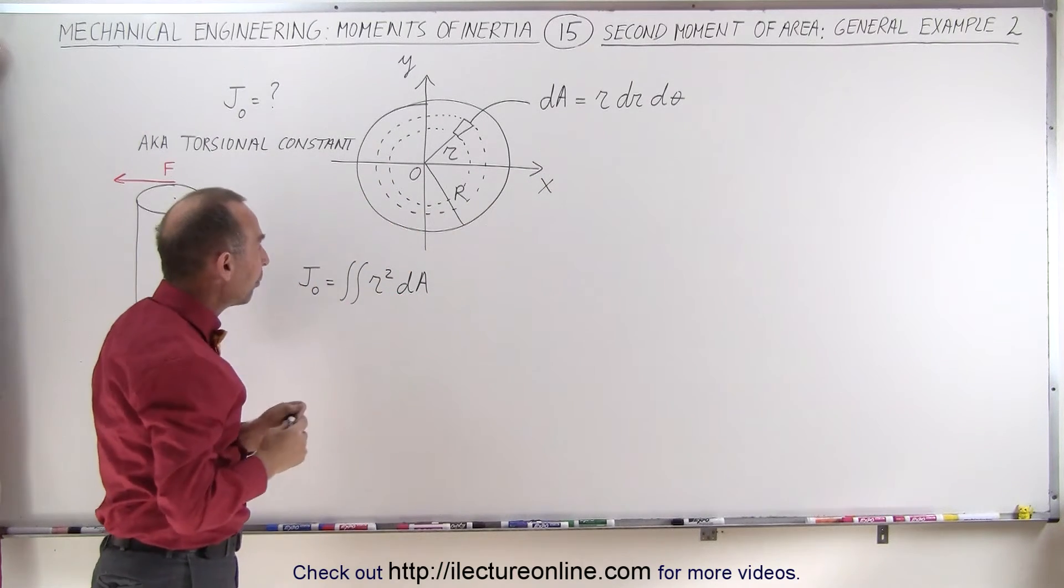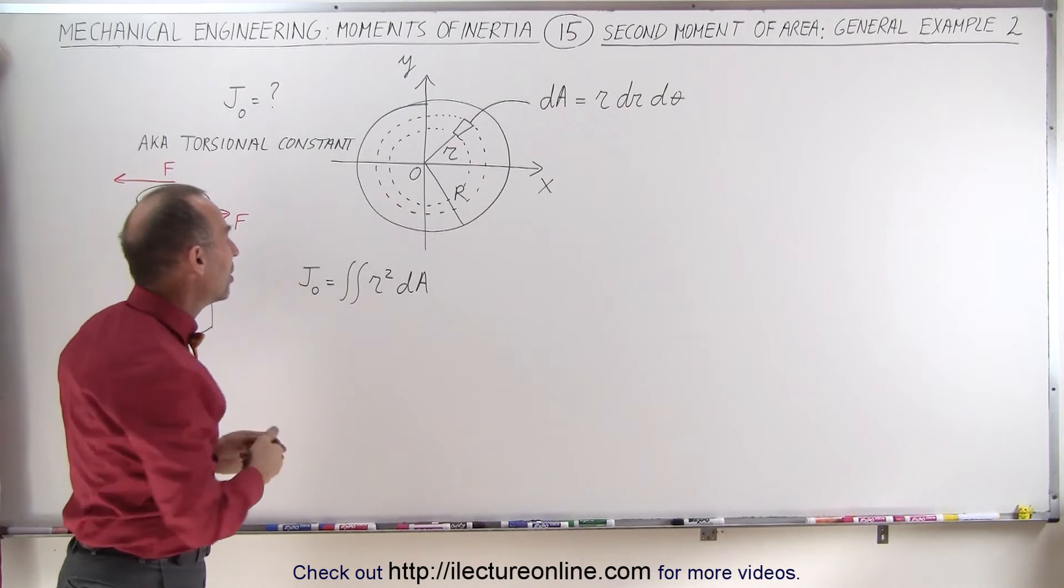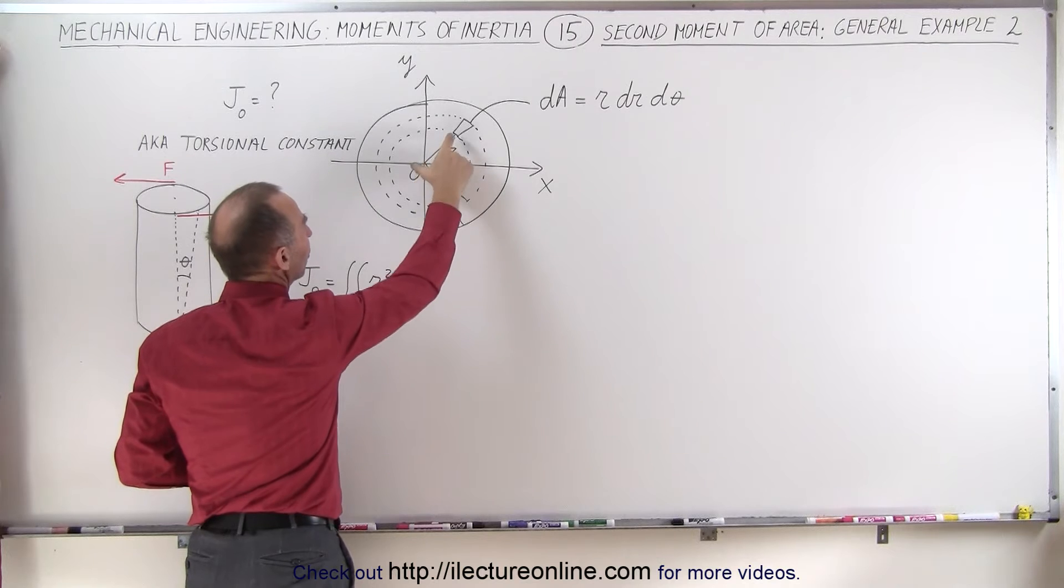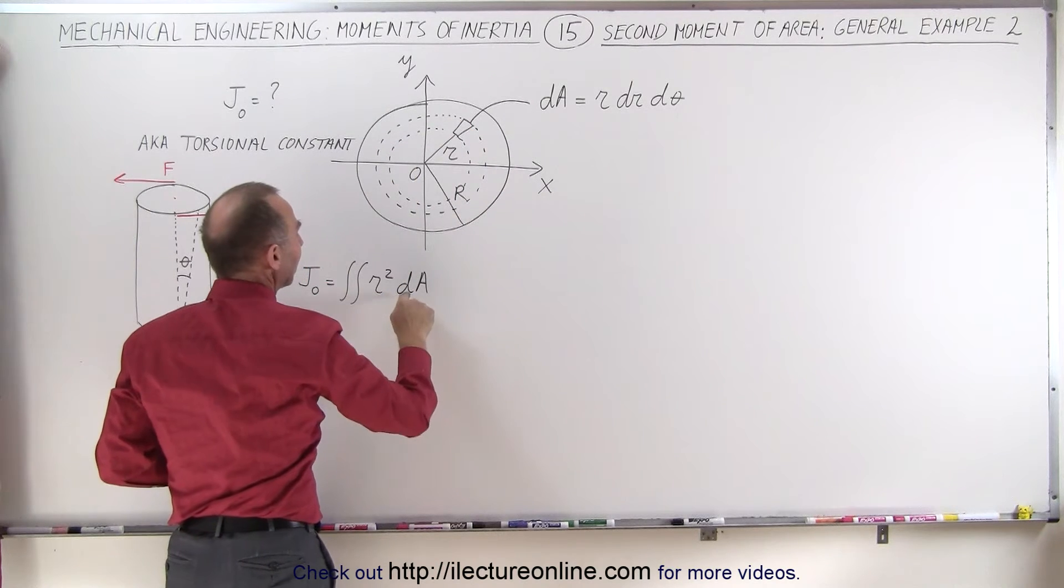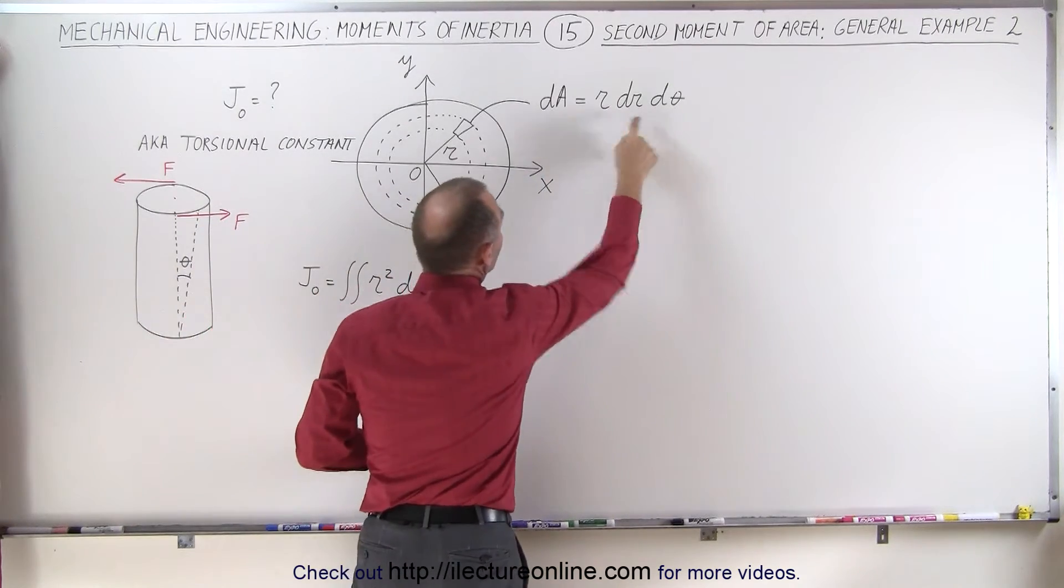And at that point we're going to find it by taking the double integral of r squared dA. r is the distance from the point of rotation at the center to an area element, and the area element dA in cylindrical coordinates would be r dr d theta.